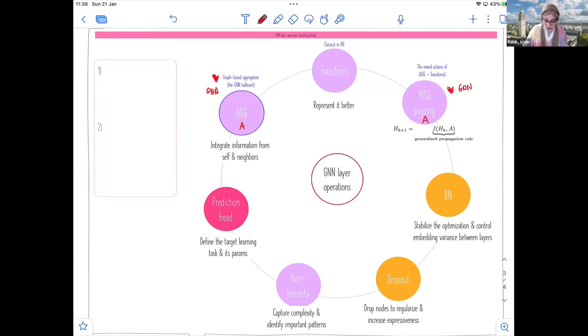And actually, if you take these out, you will fall back onto the regular operations that we use in a neural network. So now, let's put them back here because we are doing GNNs. First, aggregation. Aggregation is an important operation because it allows us to integrate information from both self, the self node, and also its neighbors. It's a graph-based aggregation. This is a hallmark of a GNN model.